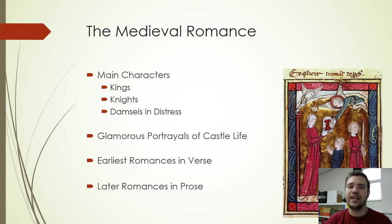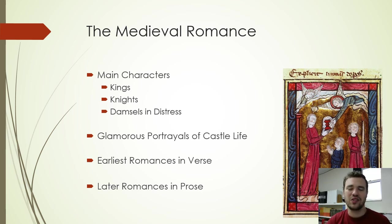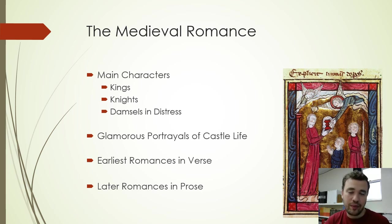Now let's get into more specific characteristics of medieval romances. The main characters are usually kings and queens, knights, and damsels in distress — you'll see a lot of those characters in Le Morte d'Arthur. It's also characterized by glamorous portrayals of castle life, focusing on the feasting and celebrations that take place in the palace. The nitty-gritty details about medieval life that we often find gross — chamber pots, the black plague — don't really make it into medieval romances. Medieval romances idealize the medieval era and castle life; it's a fantasy depiction.